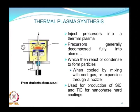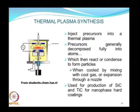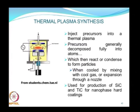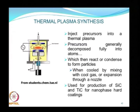Thermal plasma synthesis requires taking vapor precursors and introducing them into a thermal plasma, which supplies additional energy to break down the precursors completely into atoms. High molecular weight molecules are broken into their constituent atoms by plasma irradiation; these atoms then react or condense to form particles, accomplished by cooling via mixing with a cool gas or expanding the vapors through a nozzle. This method is widely used for production of silicon carbide and titanium carbide for nano-phase hot coatings.